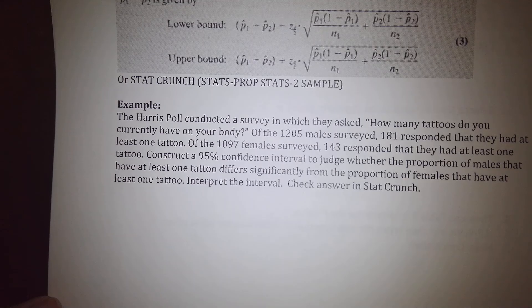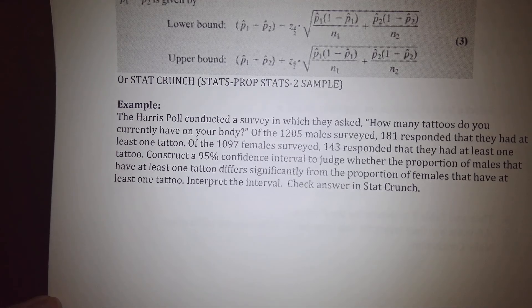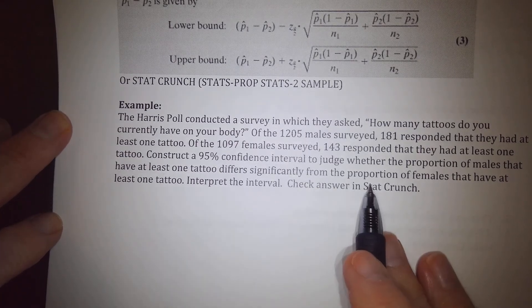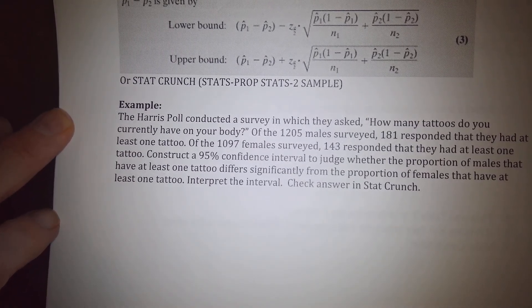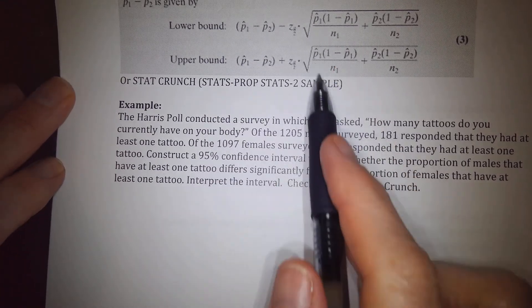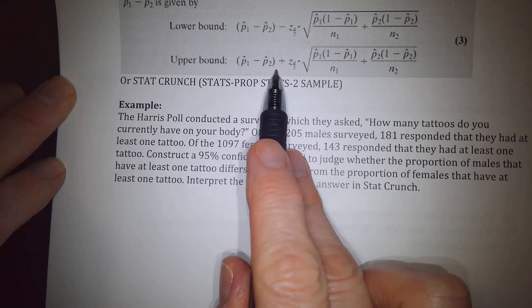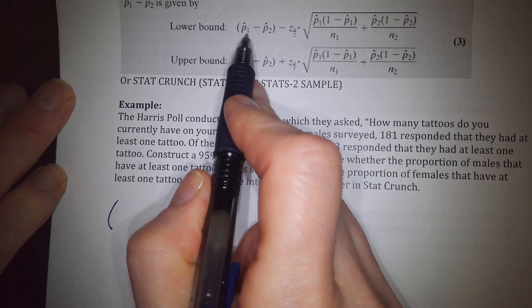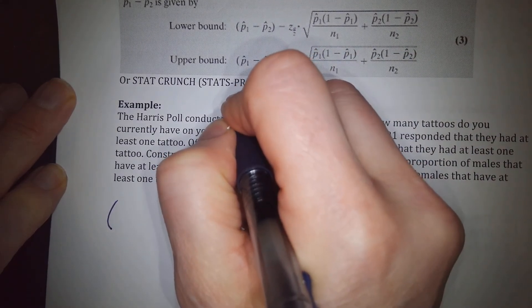The Harris Poll conducted a survey asking how many tattoos people currently have. Of 1,205 males surveyed, 181 responded that they had at least one tattoo. Of 1,097 females surveyed, 143 responded that they had at least one tattoo. We'll construct a 95% confidence interval to judge whether the proportion of males with at least one tattoo differs significantly from the proportion of females with at least one tattoo, then interpret the interval.